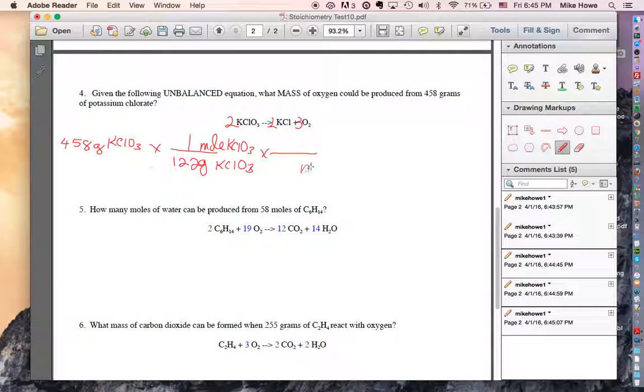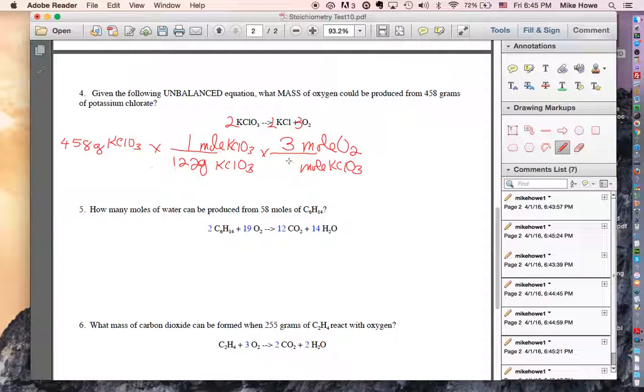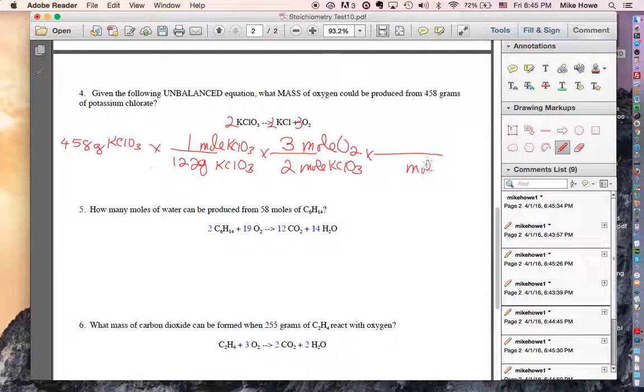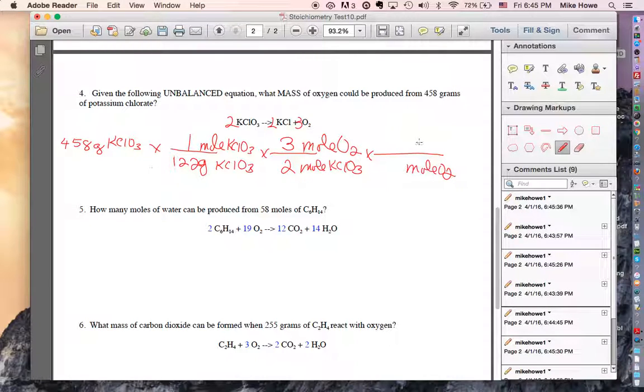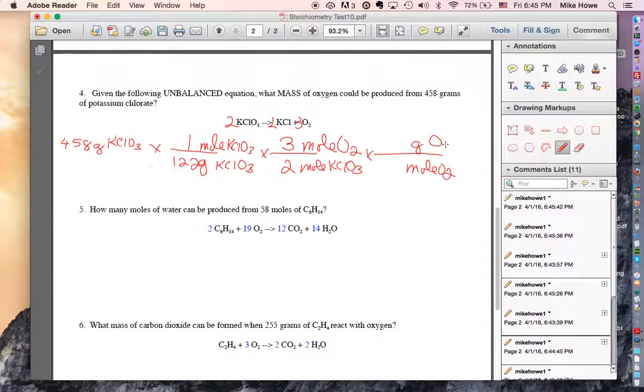Since moles are here, we're going to put moles on the bottom. And we're going to put moles of what we're looking for on top. What were we looking for? It says mass of oxygen, so we would need to find moles of oxygen first. The number in front of the oxygen is a 3. The number in front of the potassium chlorate is a 2, right there. Now we have moles of O2, so we put moles of O2 on the bottom. And we want to find grams, because I think it asks for mass, not volume. Yes, mass of oxygen, so grams of O2. If it had asked for volume, you'd use liters up here and it would be 22.4.